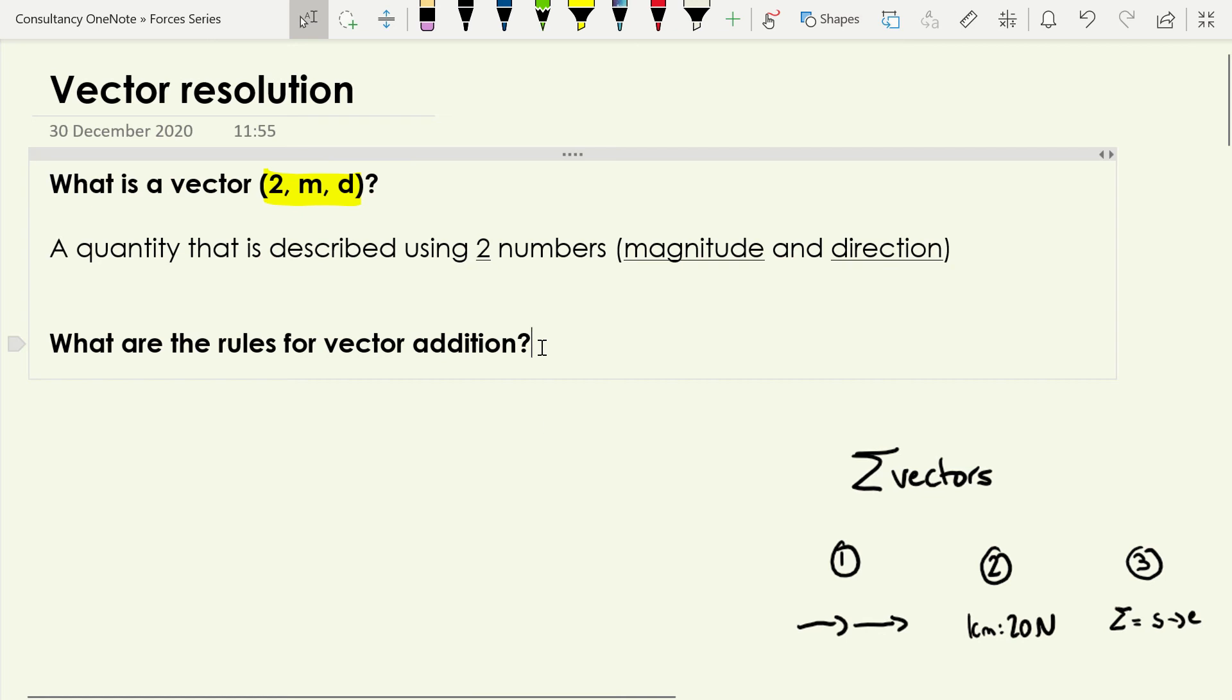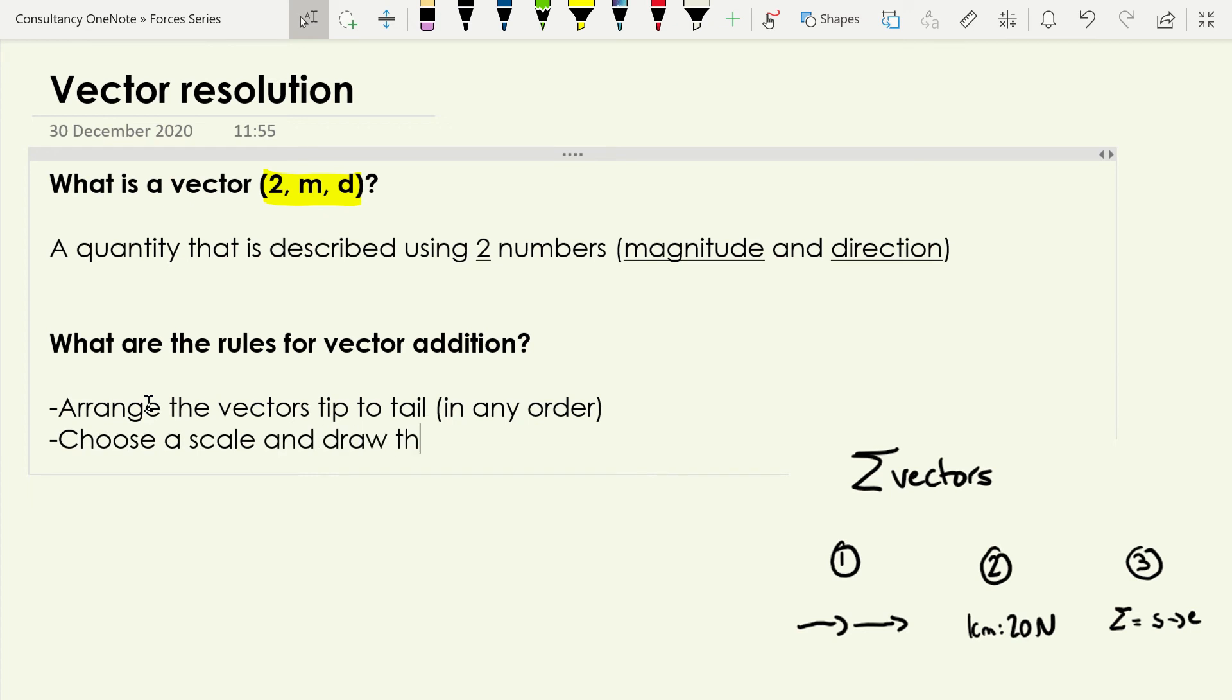And then what are the rules for vector addition? These are the retrieval cues we came up with in the video where we made these rules. So to add vectors together, the first thing we need to do is arrange the vectors tip to tail. And we can do that in any order, it doesn't matter. I tend to put the biggest one first and then the ones following that, especially if I'm doing scale diagrams because it makes things fit a little bit better. And then we need to choose a scale and draw the vectors. So these two basically are going to happen simultaneously because you can't really do one without the other. And then the third thing we do is draw a resultant from the start to the end there.